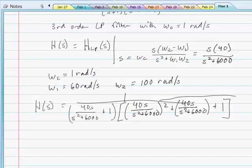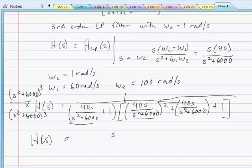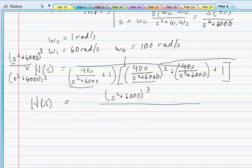So if we take, here we have a squared factor of this term, and here we have a first order factor. So if we multiply numerator and denominator by s squared plus 6,000 quantity cubed...